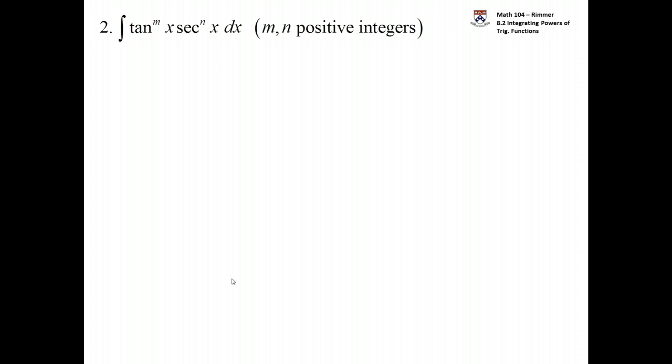How about when we have a power of tangent and a power of secant? Let's first look at the case where the power of tangent is odd. Here's what we do. It's reminiscent of what we did before in the previous setup. We're going to factor out one power of secant and one power of tangent. It's all about setting up a u substitution. By you factoring out a power of secant and a power of tangent, that's going to be part of du.